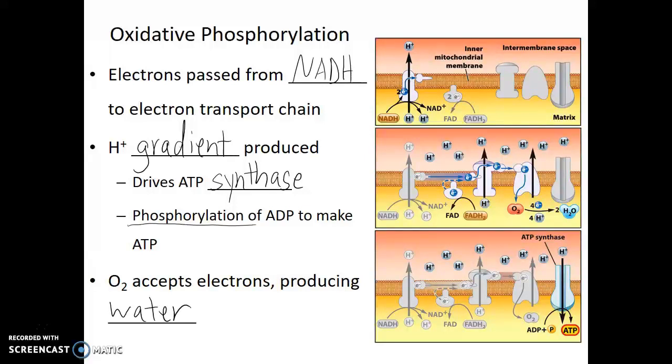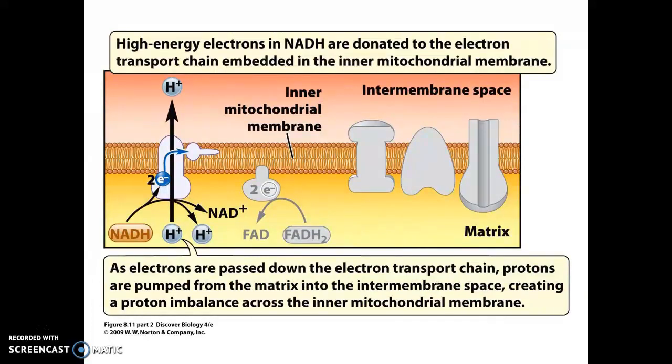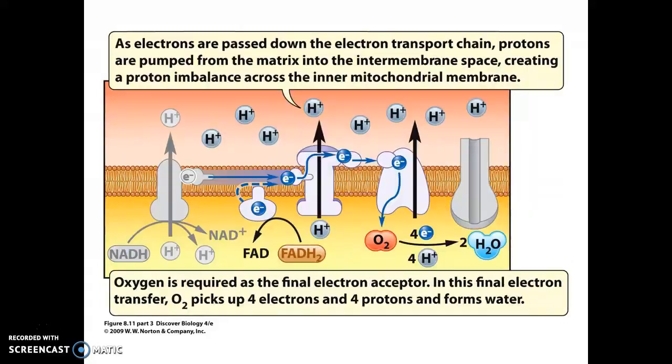So as we see how this process develops, high-energy electrons in NADH are donated to the electron transport chain embedded in the inner mitochondrial membrane. As electrons are passed down the electron transport chain, protons are pumped from the matrix into the intermembrane space, creating a proton imbalance across that inner mitochondrial membrane. Oxygen is required as the final electron acceptor. In this final electron transfer, oxygen picks up four electrons and four protons and forms water.